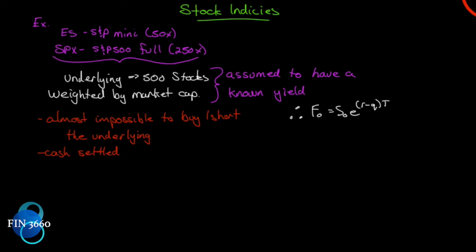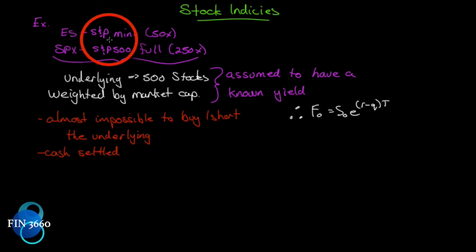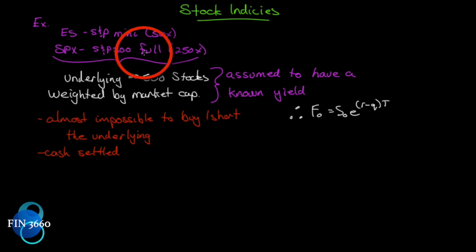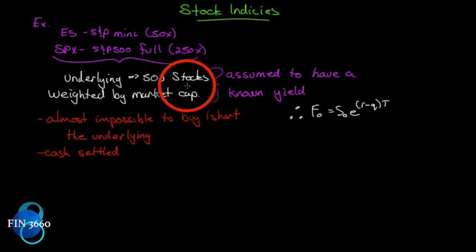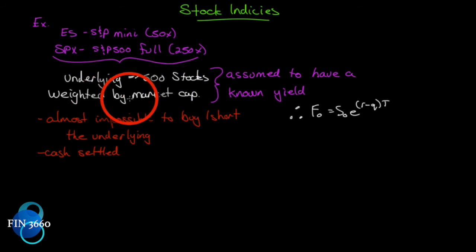Let's look at stock indices — we can be rather quick on this one. Some examples of stock indices or futures on stock indices are the ES and SPX. The ES is the S&P mini, which is 50 times the S&P 500 index, and the SPX is the full futures contract at 250 times the underlying, which is the 500 stocks of the S&P 500.